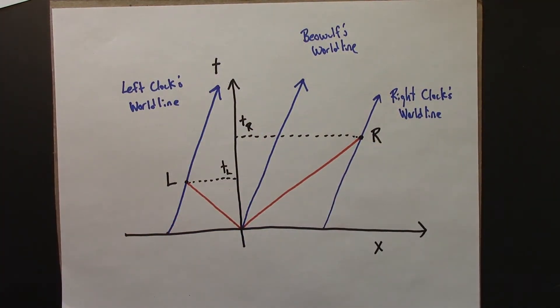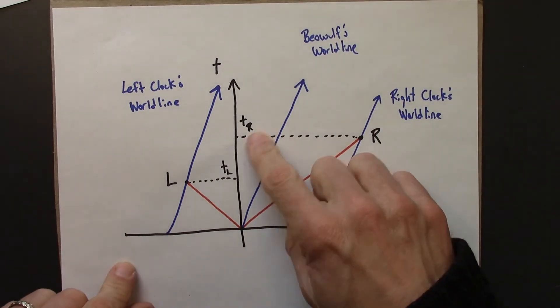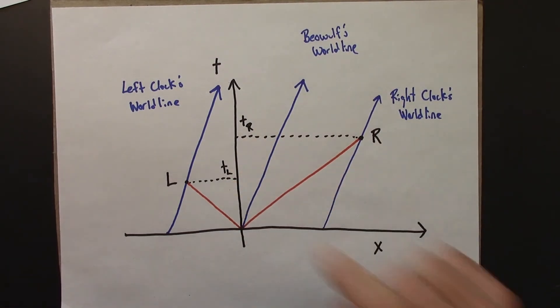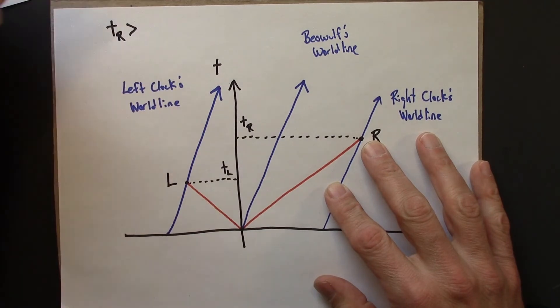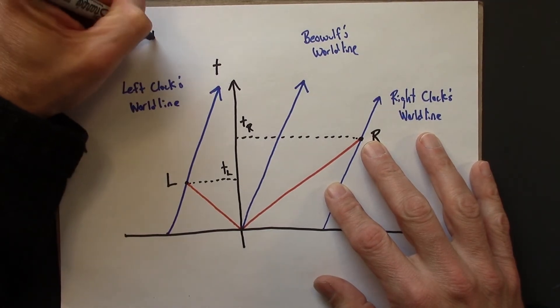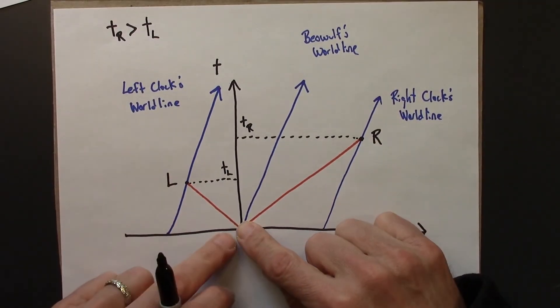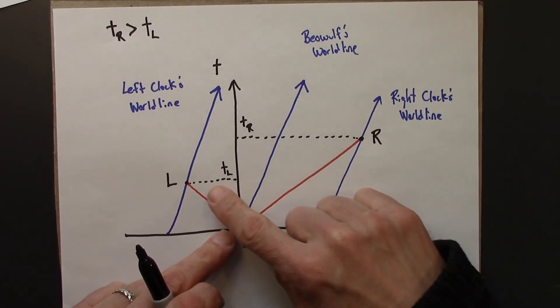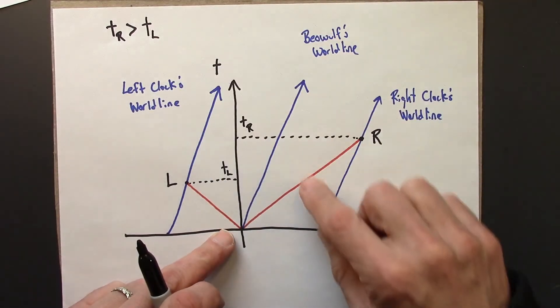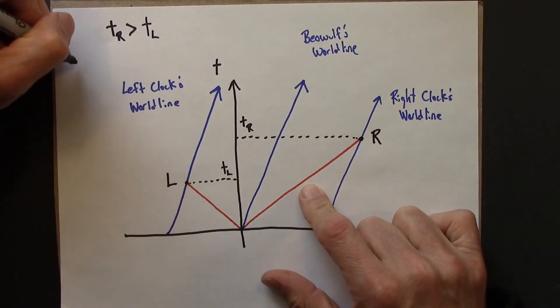And so notice that tR is greater than tL. So I'll write that here, tR is greater than tL. That means that Anastasia observes event R as happening after event L, a later time, a larger time.